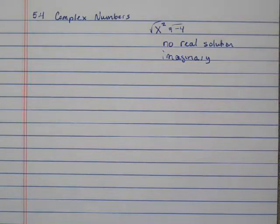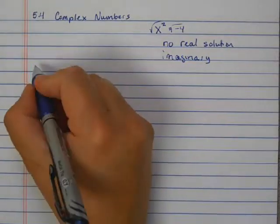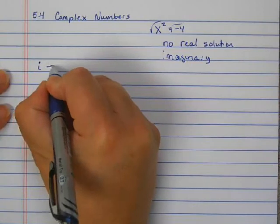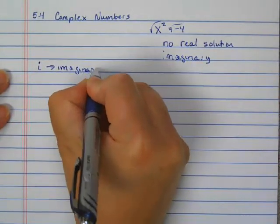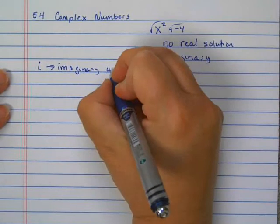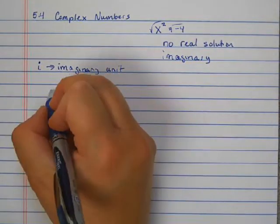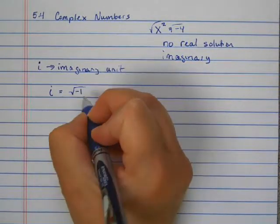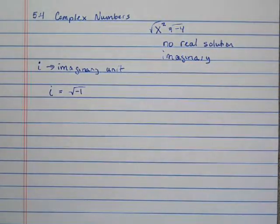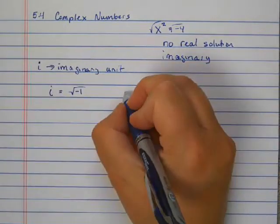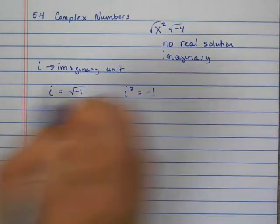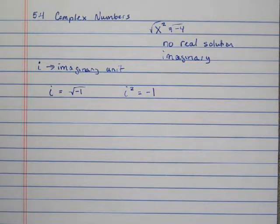It will be on the ACT, at least one question, so we want to make sure we know how to do these. Plus we need to know how to solve when we have a negative number. The imaginary unit is called i. i is the imaginary unit. i equals the square root of negative one. Also, i squared is negative one. So these are the ways we're going to convert.